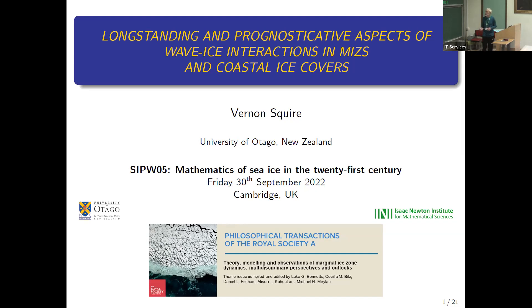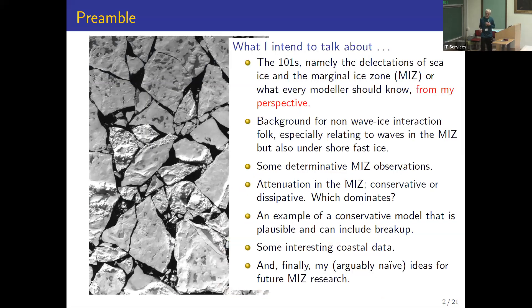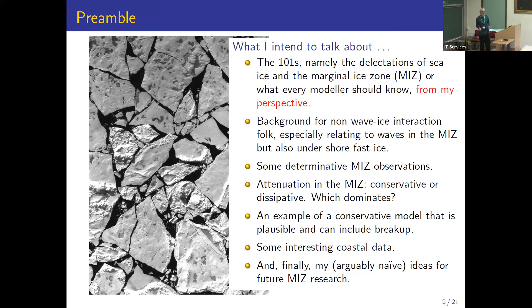I'll start with some really basic stuff about sea ice and the marginal ice zone, just to remind you. This is a conference founded in mathematics, and mathematicians tend to use parsimonious models. I really want to make sure the mathematicians here understand that sea ice is a horrendously complex material, and the marginal ice zone, being made up of sea ice, is equally complex. Then I'll move on to wave-ice interaction.